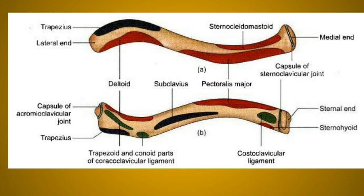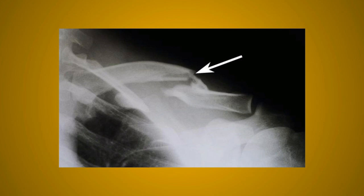The subclavius muscle acts as a cushion for the subclavian vessels and the cords of the brachial plexus. The clavicle is most commonly fractured by falling on the outstretched hand. The most common site of fracture is the junction between the two curvatures of the bone — between the medial two-third and lateral one-third — which is the weakest point of the clavicle.